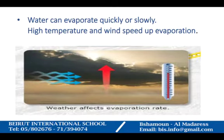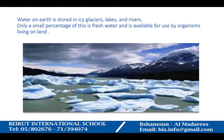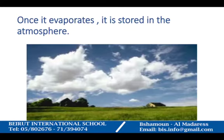Water can evaporate quickly or slowly. High temperature and wind speed up evaporation. Water on earth is stored in icy glaciers, lakes, and rivers. Only a small percentage of this is fresh water and is available for use by organisms living on land. Once it evaporates, it is stored in the atmosphere.